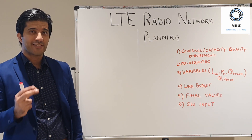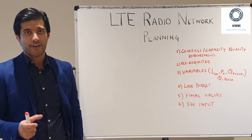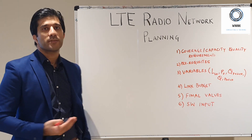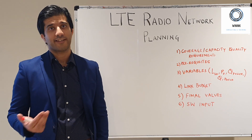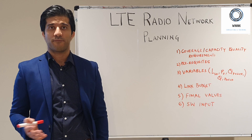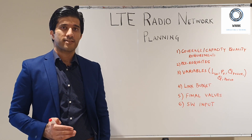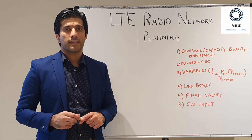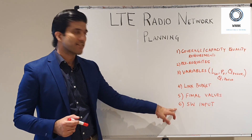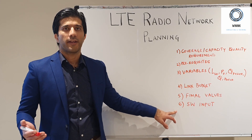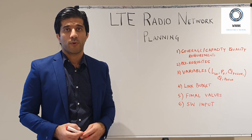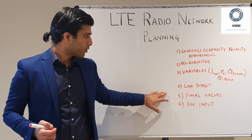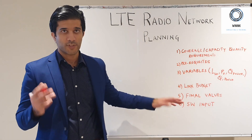The fifth step is your final values — the cell range, site-to-site distance, and the constants used to get those values. The last step is the inputs that go into your planning software, such as Atoll or Planet. I want to stress that most importance is usually given to operating these software tools, but my advice is: understanding the software is something anyone can learn from a manual, but you need a very clear understanding of these fundamental steps to effectively use software for LTE radio network design.